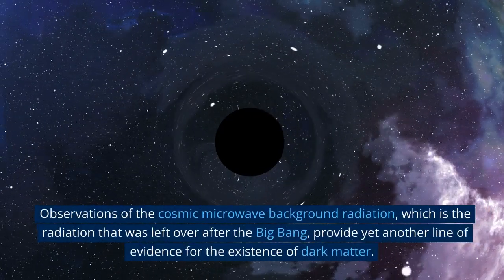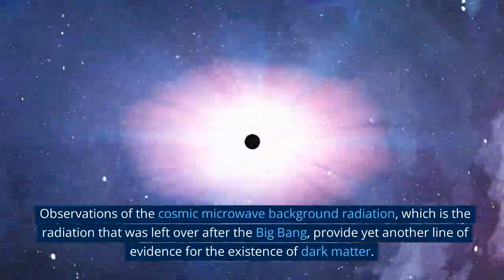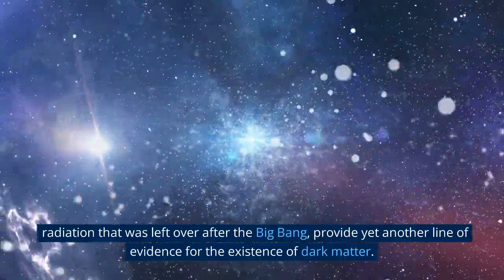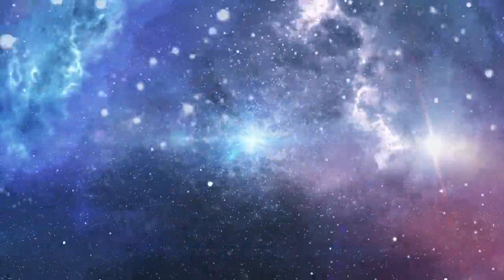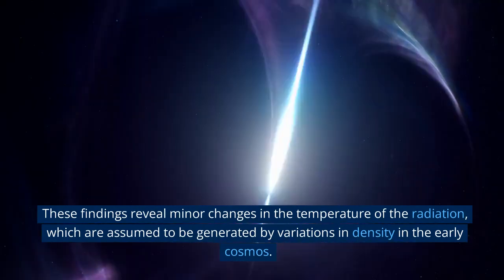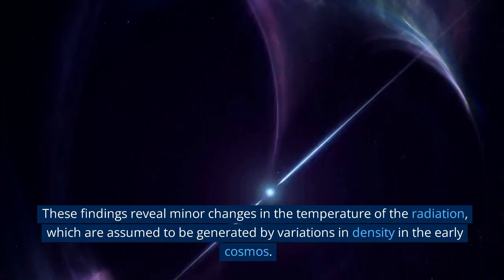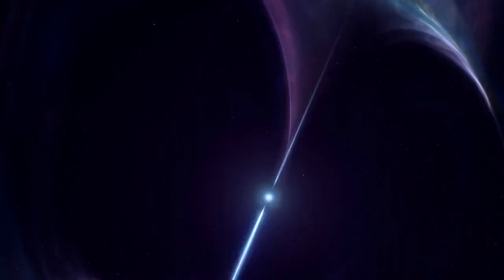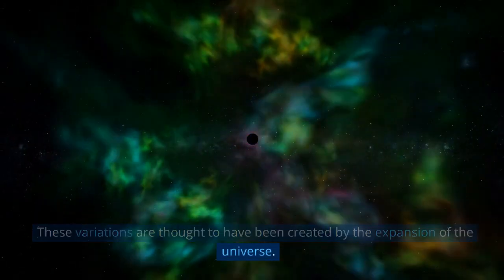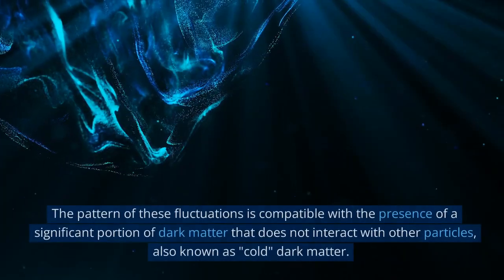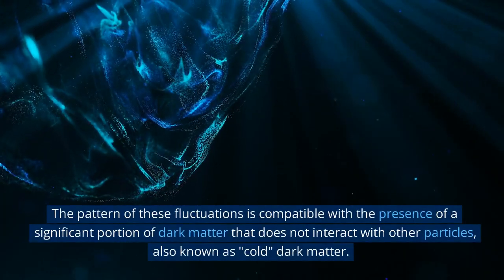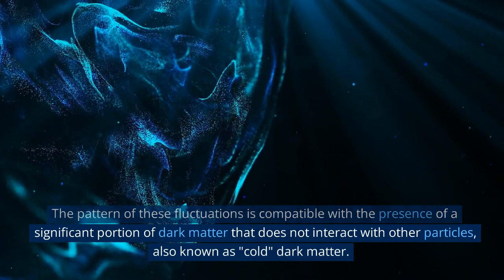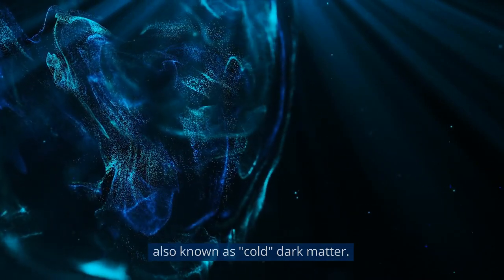Observations of the cosmic microwave background radiation, which is the radiation that was left over after the Big Bang, provide yet another line of evidence for the existence of dark matter. These findings reveal minor changes in the temperature of the radiation, which are assumed to be generated by variations in density in the early cosmos. The pattern of these fluctuations is compatible with the presence of a significant portion of dark matter that does not interact with other particles, also known as cold dark matter.